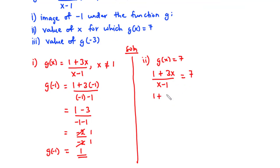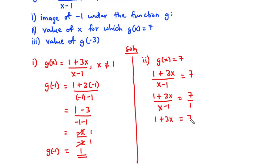We have (1 + 3x) over (x minus 1) equals 7 over 1. We are going to cross multiply. So that gives us 1 times (1 + 3x), which is still 1 + 3x, equals 7 times (x minus 1). We expand: 7 times x is 7x, and 7 times negative 1 is negative 7. Let's transpose 7x to the left-hand side.